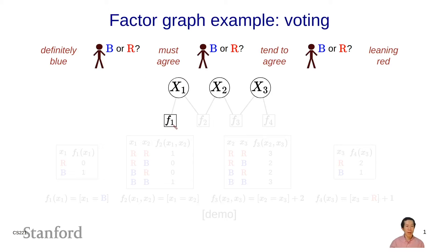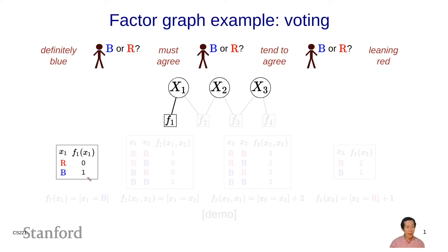Let's begin with f1. f1 is going to capture the fact that person one is definitely blue. I'll write f1 as a table specifying for each value of x1 a number: f1(x1) is 0 if x1 is red, and 1 if x1 is blue. This captures the fact that 0 means no way this is going to happen, and 1 means it's okay. Mathematically, I can write f1 as an indicator function of x1 equals b.